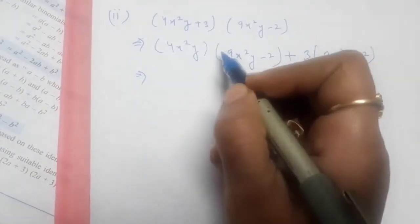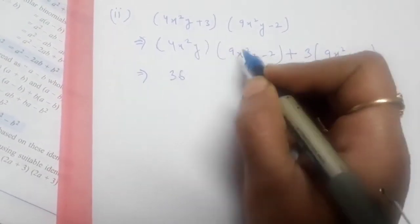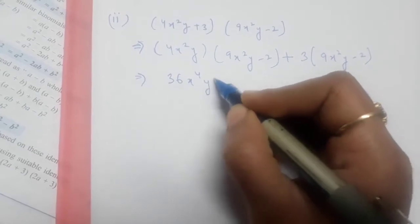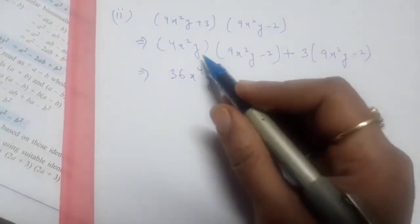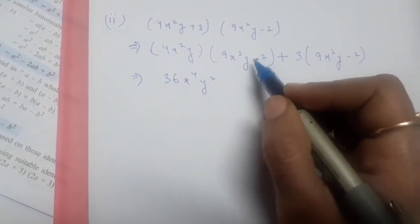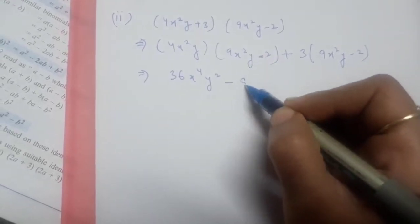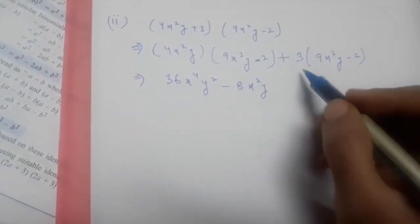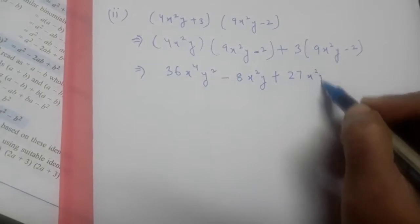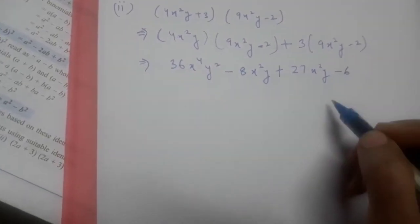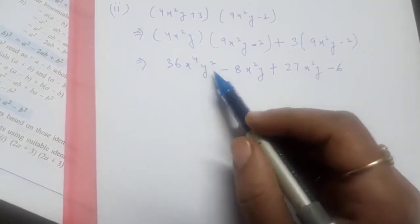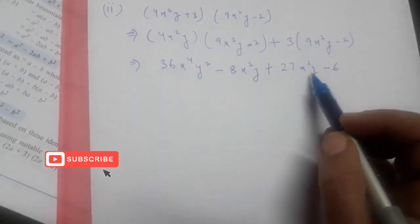In our next step: 4 × 9 = 36, x² × x² = x⁴, y × y = y². Now 4x²y multiplied by −2 gives −8x²y. Then 3 × 9 = 27, giving 27x²y, and 3 × 2 = 6. So the first expression is 36x⁴y² − 8x²y + 27x²y − 6.